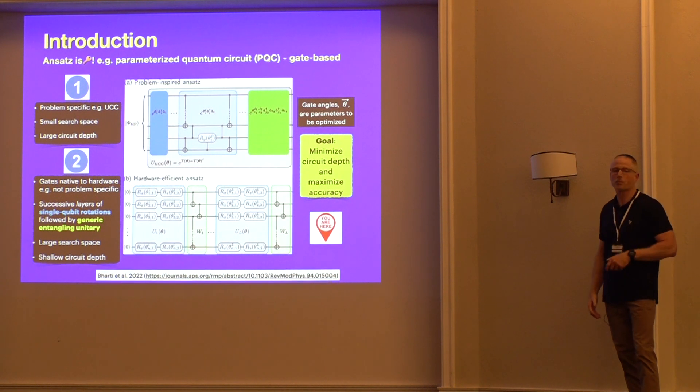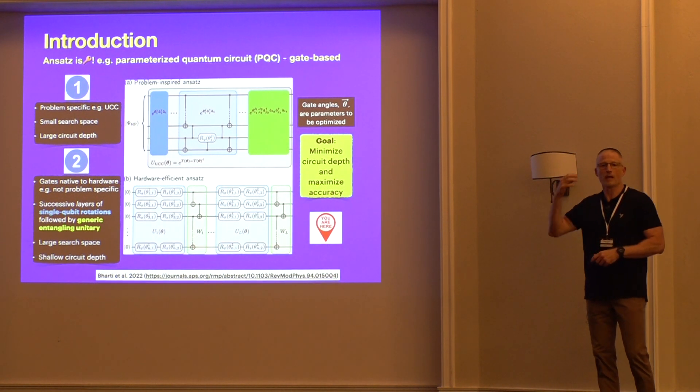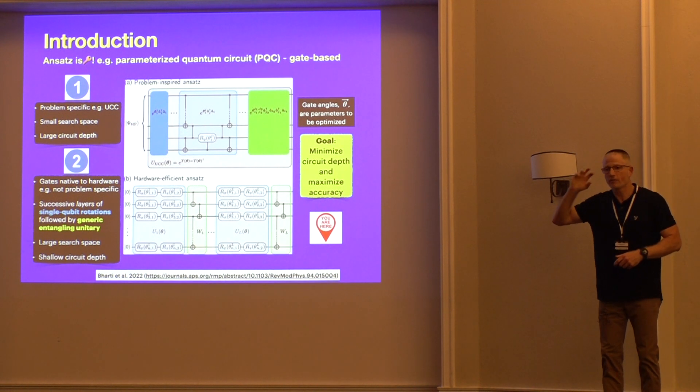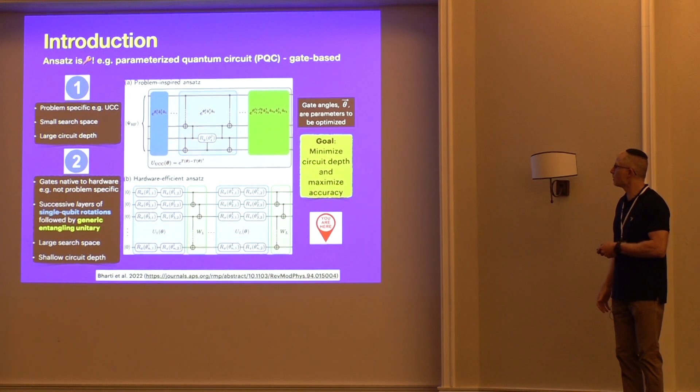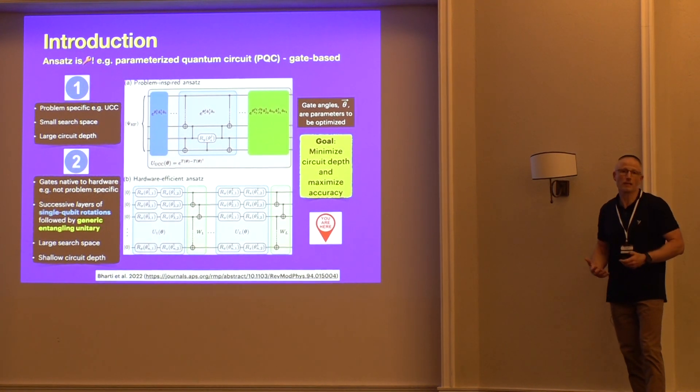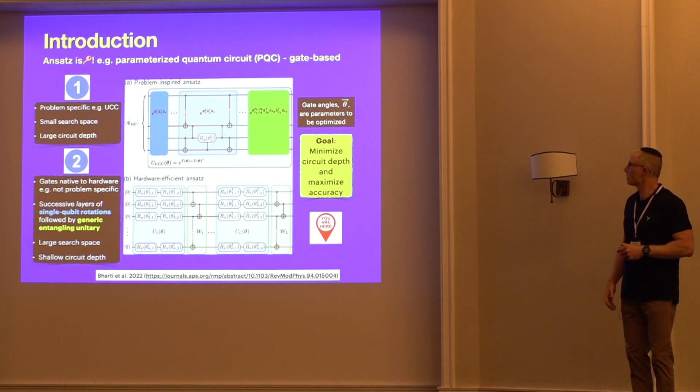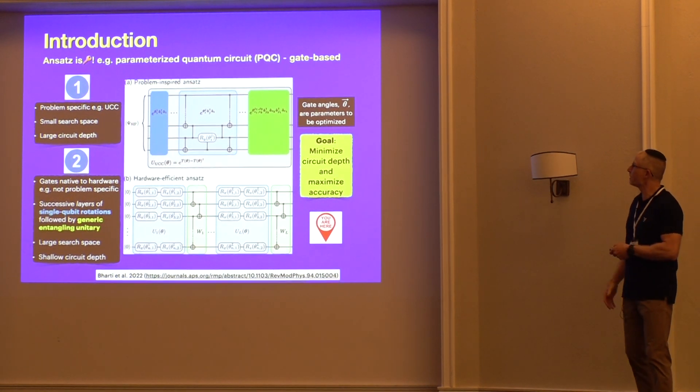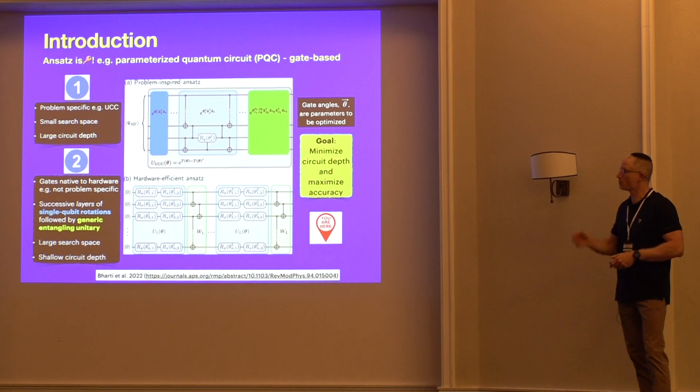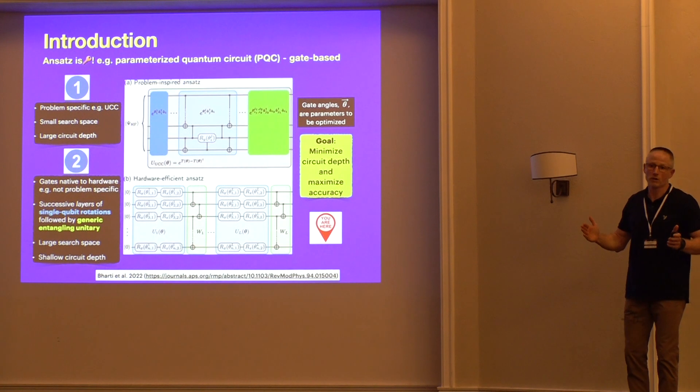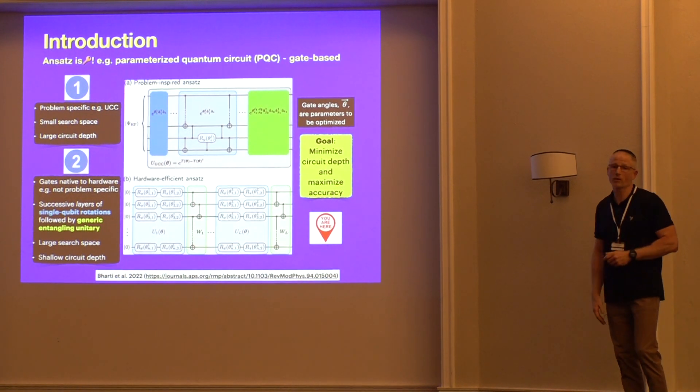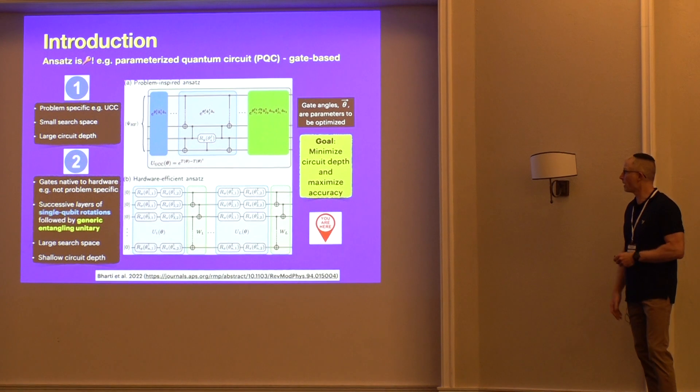The first one is what's called a problem-inspired ansatz, and as the name suggests, it's constructed based on the physics of the problem that you're trying to solve. For example, in the context of chemistry, we have the unitary coupled cluster, which is a typical classical ansatz used for chemistry. The advantage is that it's problem-specific, so the search space is relatively small, and that increases the chances that you'll be able to get a solution. But it usually translates into a very large circuit depth, which is disadvantageous with regard to decoherence and gate errors.